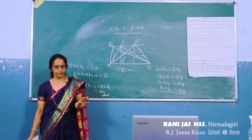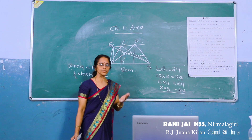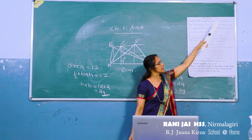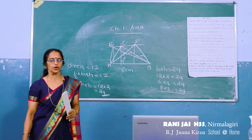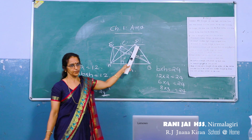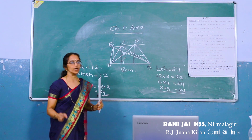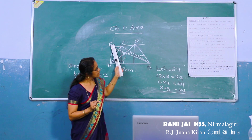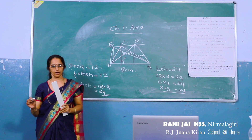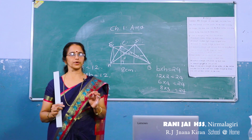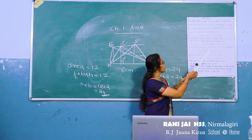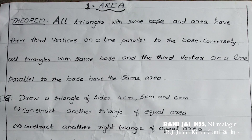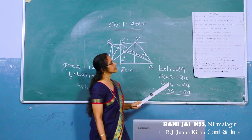So from here we get the theorem. Look at this chart. All the triangles with the same base and with the third vertex on a line parallel to the base have equal area. Conversely, all triangles with the same base and third vertex on a line parallel to the base have the same area.